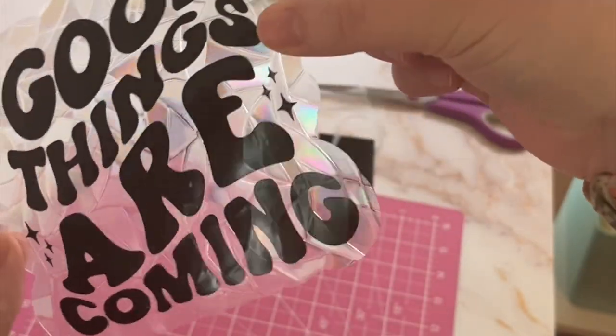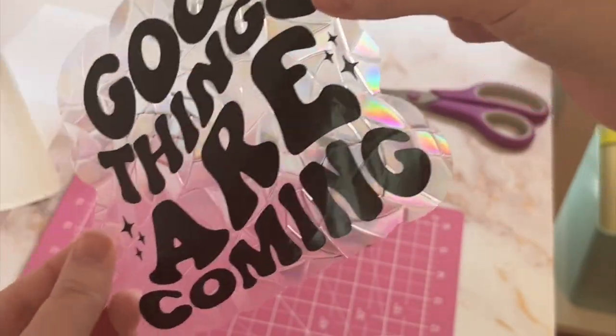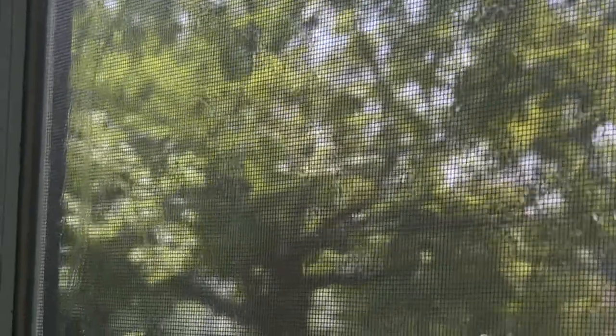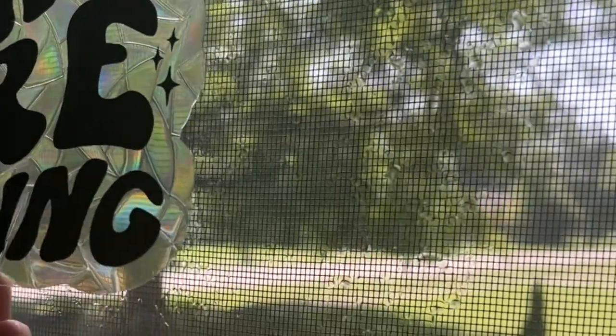But now you can see this is what it looks like with the backer off. So you can't see it that well but I just got the part of the window that I want to use wet and I'm going to put the cling right on.